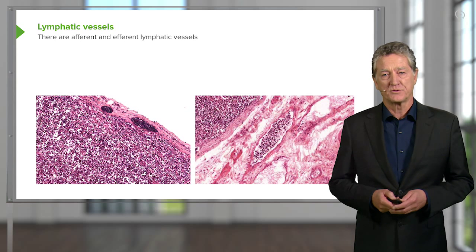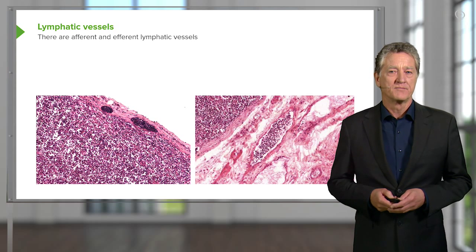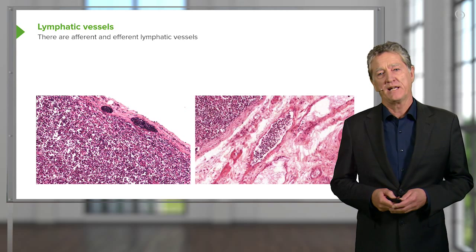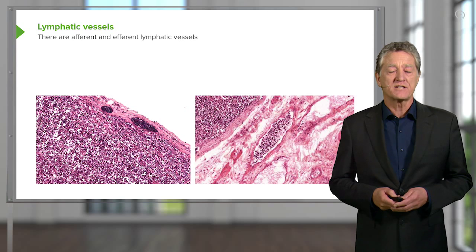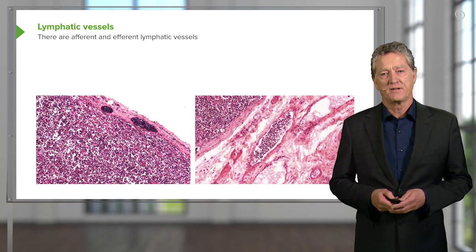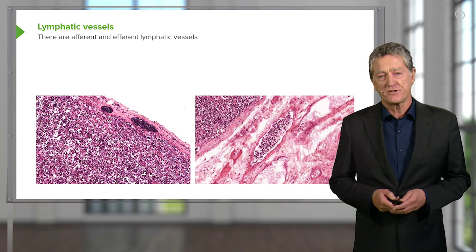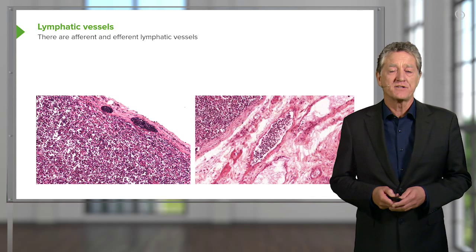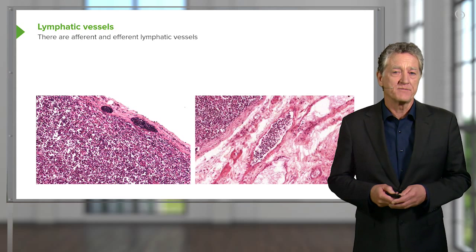Those lymph vessels on their way back to the veins pass through structures called lymph nodes. This is beneficial because it enables lymph or interstitial fluid to be exposed to lymphocytes, so that lymphocytes can check all that lymph tissue and see whether or not there are pathogens present anywhere in the interstitium around cells everywhere in the body. And that's the role of these lymph nodes.